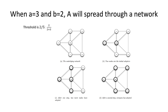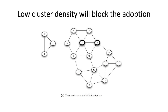For actual adoption when A equals 3 and B equals 2, A is going to spread through the network. The threshold is 2 out of 5. Once the proportion of people surrounding you is higher than 2/5, you will adopt. For example, node R has 2 out of 3 neighbors adopting, which is greater than 2/5, so R adopts. Node S doesn't adopt until a later stage. This is based on actually seeing those people have adopted.